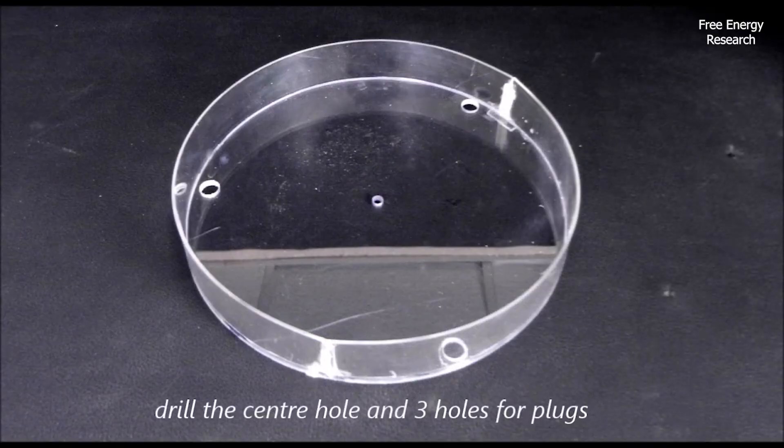To complete this stage, holes are drilled: one at the center for the axle and three smaller ones to allow for liquid filling.